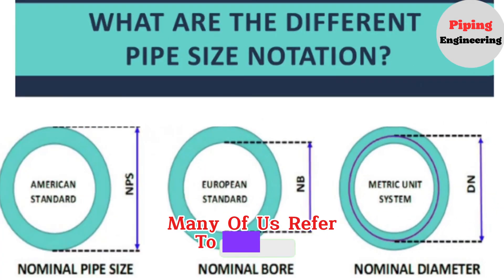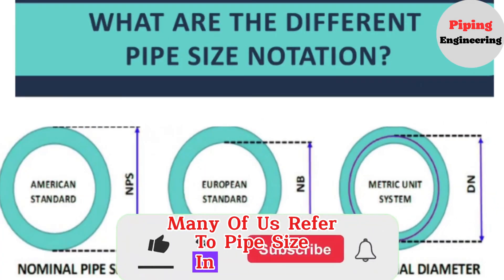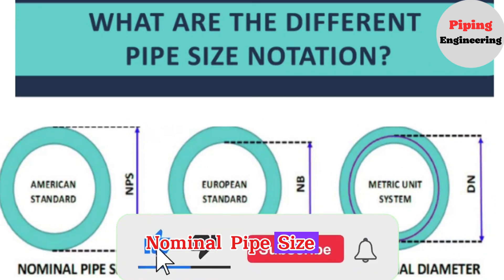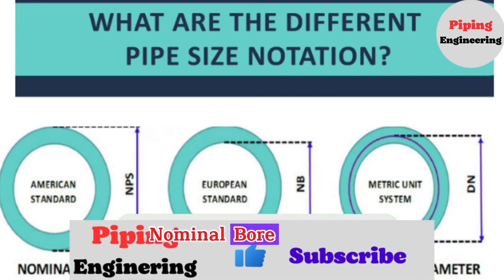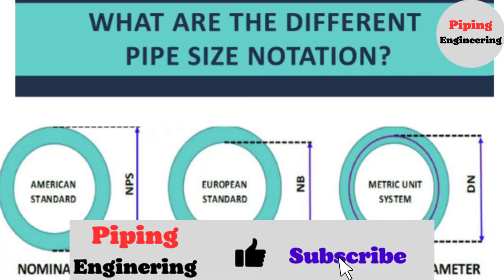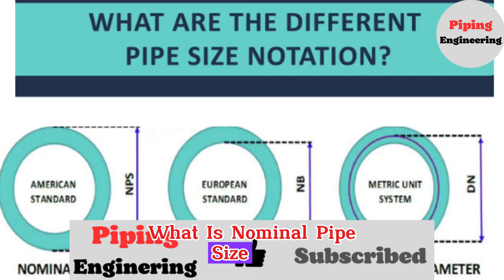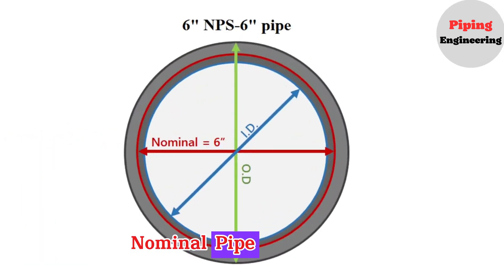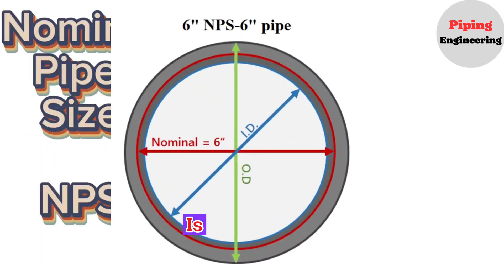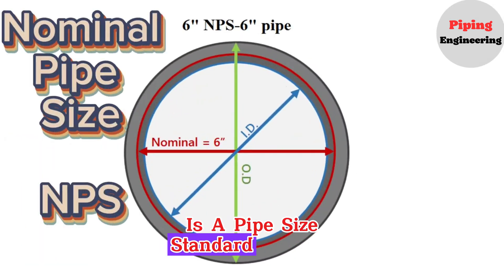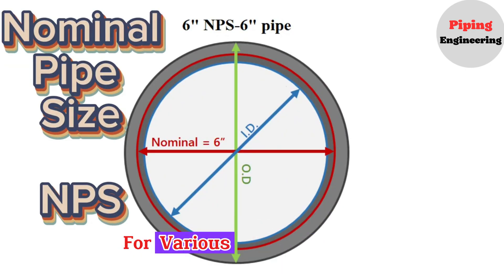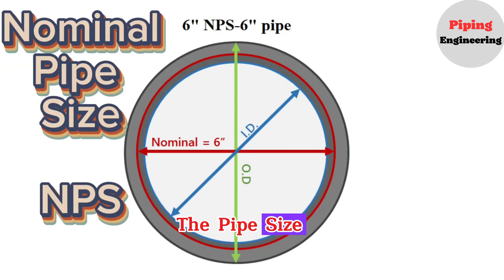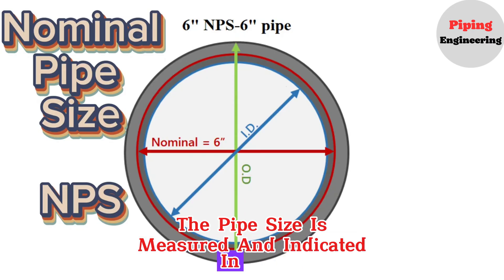Many of us refer to pipe size in terms of nominal pipe size, NPS; nominal bore, NB; and nominal diameter, DN. Nominal pipe size, or NPS, is a pipe size standard used in the United States for various piping systems. The pipe size is measured and indicated in inches.